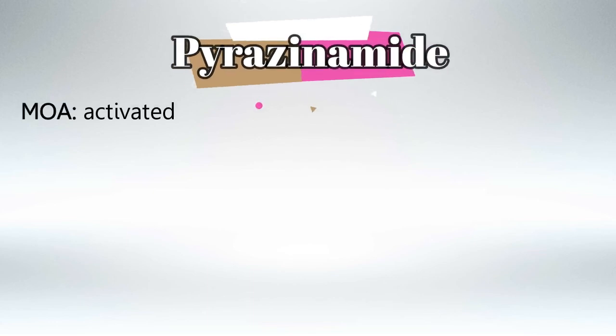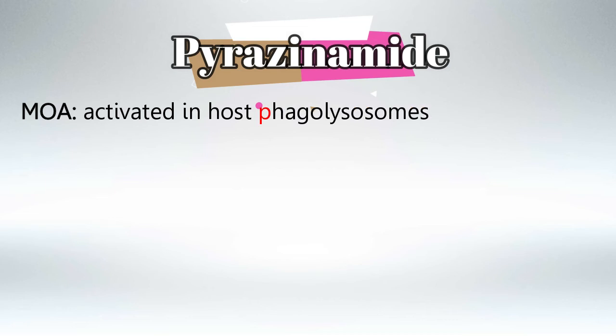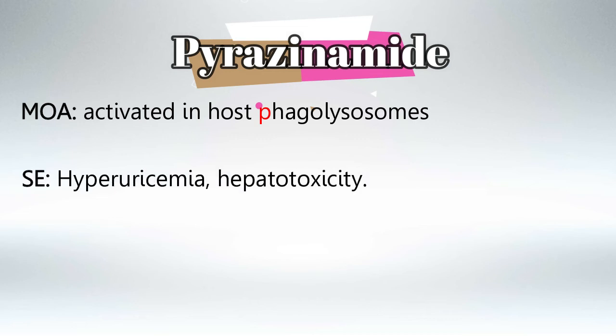Next is pyrazinamide. The mechanism of action is that it gets activated in the host phagolysosomes — just remember pyrazinamide starts with P and phagolysosomes starts with P as well. The side effects for pyrazinamide are hyperuricemia and hepatotoxicity. It's the only TB medication that can cause hyperuricemia.